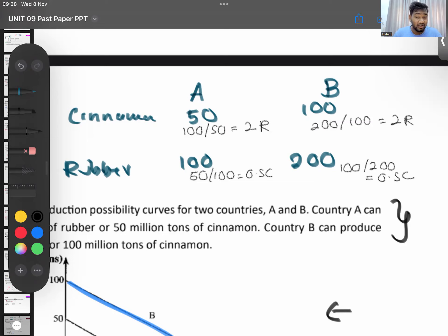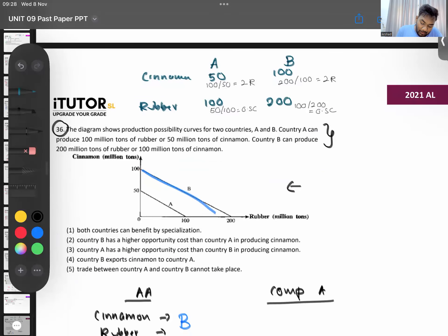Opportunity costs are the same. What did I tell you? If the numbers are the same, you can't say both countries have it - you have to say no one has the comparative advantage. Can there be any specialization and international trade then? No point. So the answer is: both countries can benefit from specialization - wrong, because no one has comparative advantage so no one will specialize. Country B has a higher opportunity cost than Country A in producing cinnamon - no, both are having the same. Country A has a higher opportunity cost than Country B in producing cinnamon - no, both have the same. Country B exports cinnamon - no, there is no international trade. Trade between Country A and B cannot take place - yes, no comparative advantage so no one can trade with each other. No point.